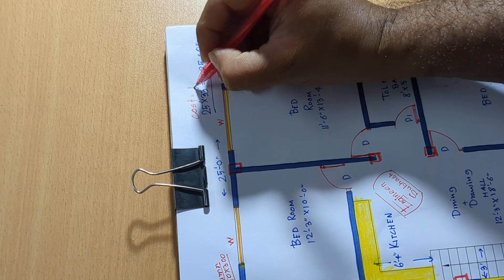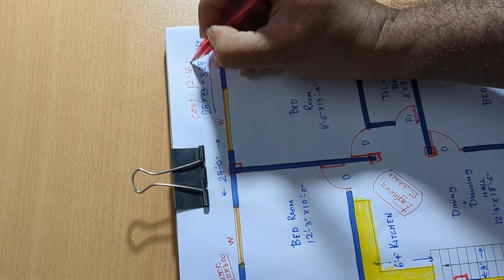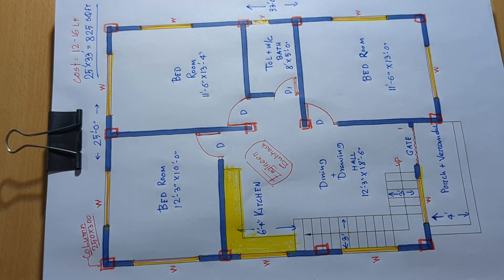7th column cost 12 to 16 lakh rupees. 11 feet 4 inch, 15 inch.